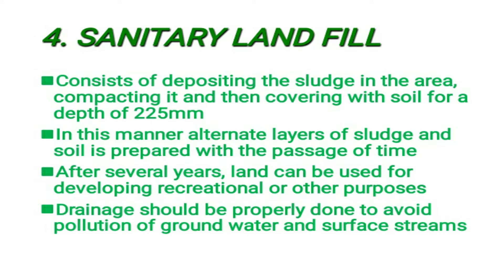The fourth method is sanitary landfill. Here, it consists of depositing sludge in the area, compacting it, and then covering with soil to a depth of 225 mm. If there are alternate layers, sludge will fill the soil in the area. After several years, the land can be used for developing recreational or other purposes. It should be properly done to avoid pollution of groundwater and surface streams.